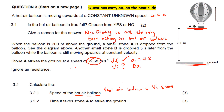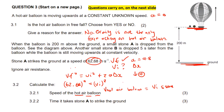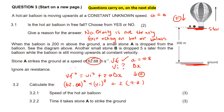Since we don't have time, we use the formula vf² = vi² + 2aΔx. I'll choose downwards as positive. The final velocity is 62.68 m/s, so vf² = 3928.0824. Acceleration is positive 9.8 (downwards). The displacement is positive 200 m because the object ends up below the starting position, and we chose downwards as positive.